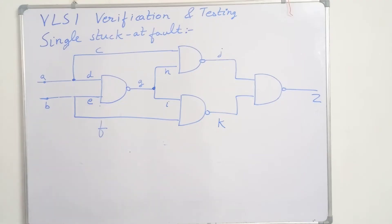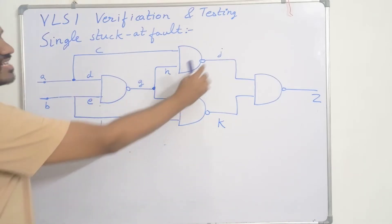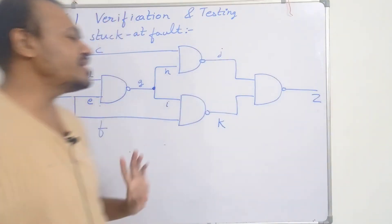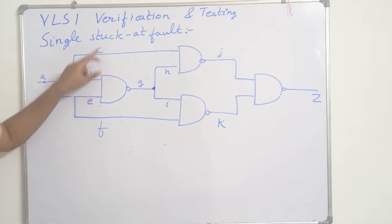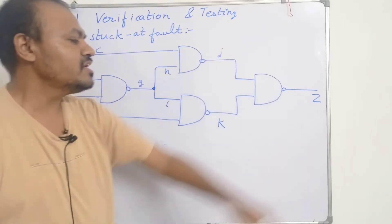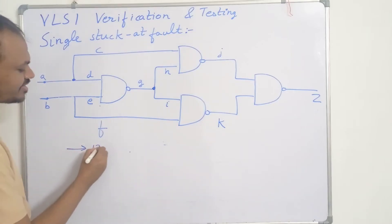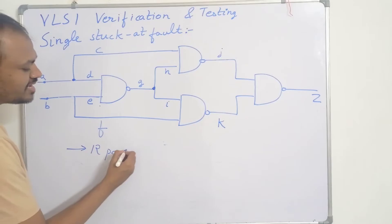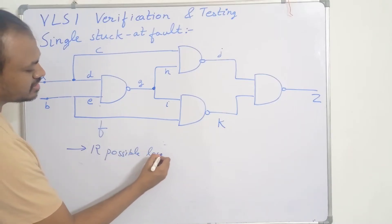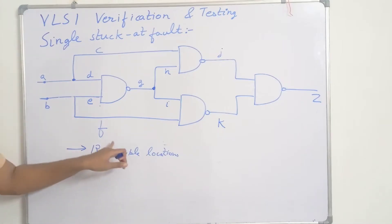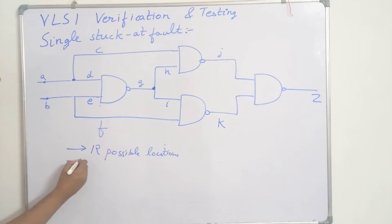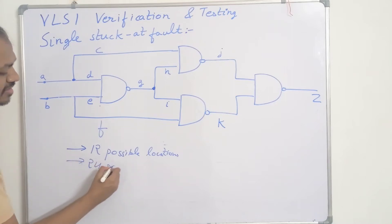So we have all these lines A, B, C, D, E, F, G, H, I, J, K, and the final output line Z. As per the single stuck-at fault model, the fault can be at any of the lines. There are 12 possible fault locations. And by the second assumption, the faulty line can be either at 0 or 1, so there are 24 possible faults.